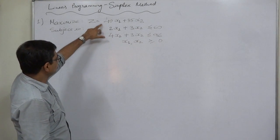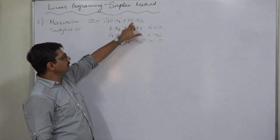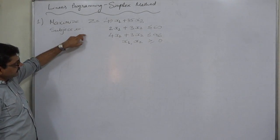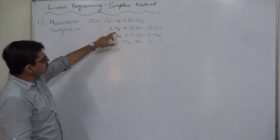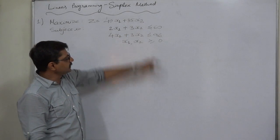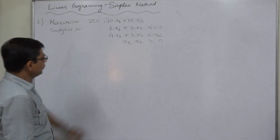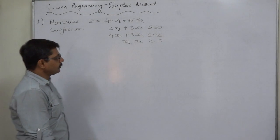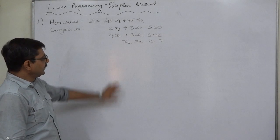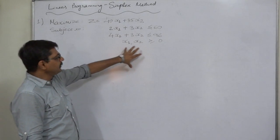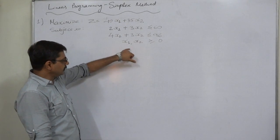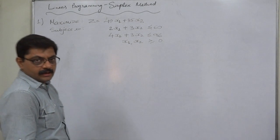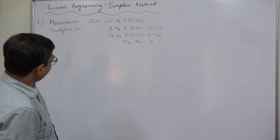The objective function is Z equals 40x1 plus 35x2, subject to the constraints: 2x1 plus 3x2 less than or equal to 60, and 4x1 plus 3x2 less than or equal to 96. Both variables x1 and x2 are non-negative, that is, greater than or equal to 0.